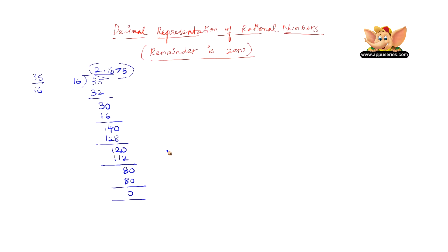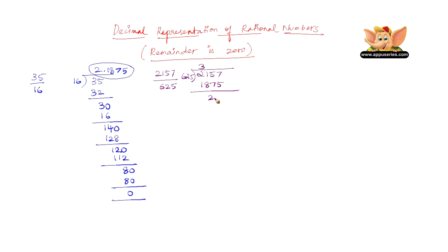Let us go to another example: 2157 divided by 625. 625 three times gives 1875, the remainder of which is 282. 282 is not divisible by 625, so add a 0 and place a decimal point.